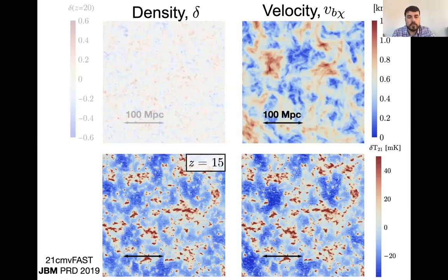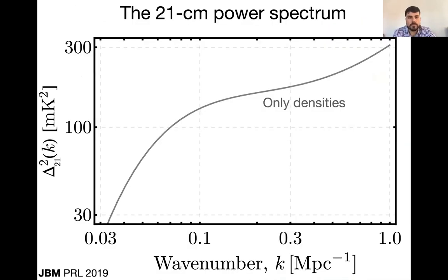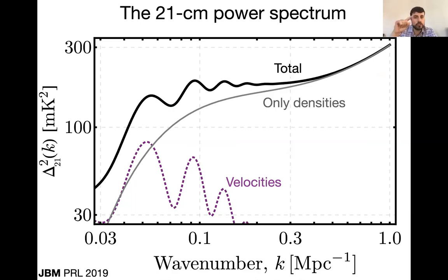You've seen the density and velocity plots. The bottom left shows 21-centimeter without velocity — just density — and the bottom right shows densities and velocities. They don't look the same by eye. Regions with higher velocity are bluer — more velocities means fewer stars, fewer stars means a smaller 21-centimeter signal. The 21-centimeter power spectrum with only densities shows no particular scale, just a smooth curve. Once you add the relative velocities, you get these large acoustic oscillations. These are Velocity-induced Acoustic Oscillations, or VAOs, which look more like a sine rather than the cosine of regular BAO. They have the same acoustic physics and the same sound horizon.